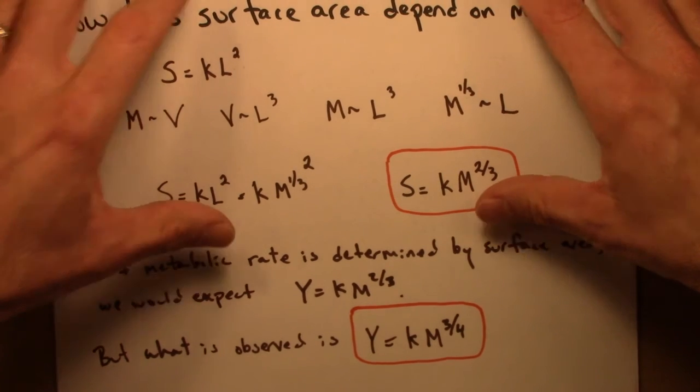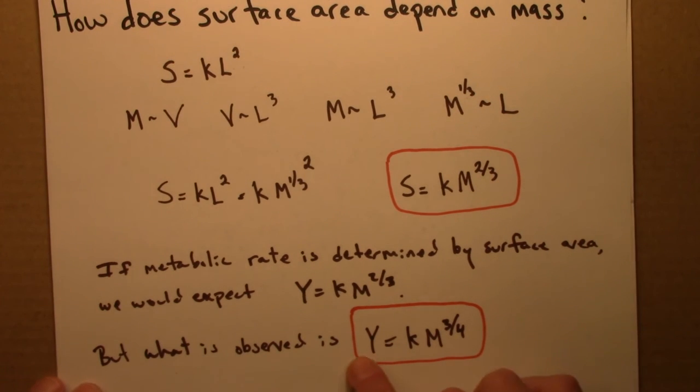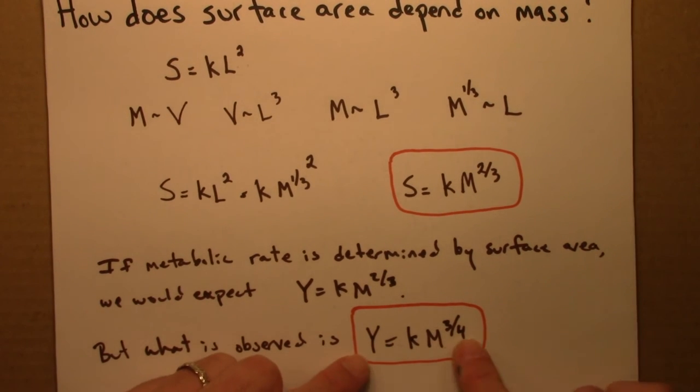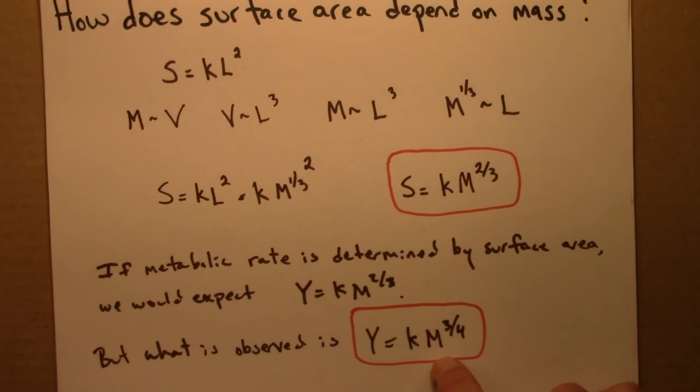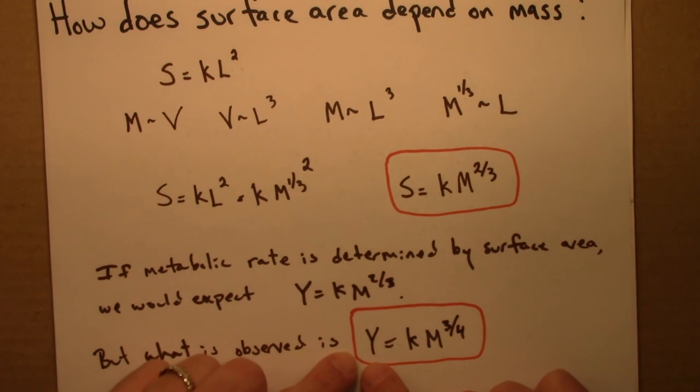So this poses a puzzle. Why is it that metabolic rate scales as a 3 quarter power of mass? For many years that was accepted, and still is accepted by and large as an empirical fact, that just happens to be how the relationship is. But there wasn't a strong compelling explanation for how this might arise.